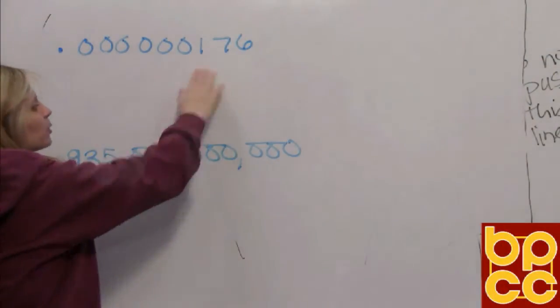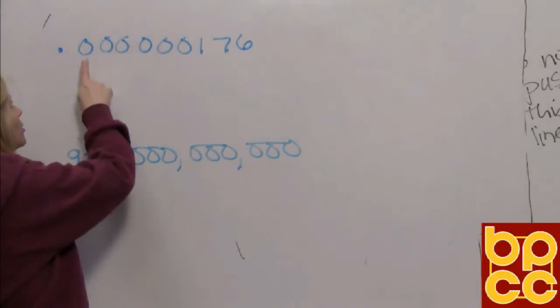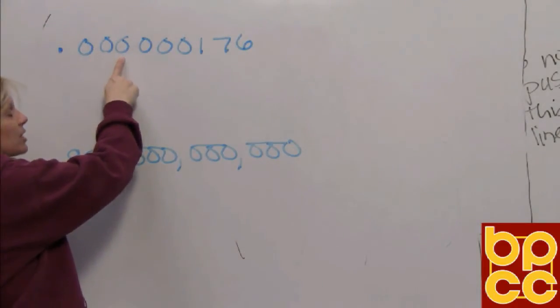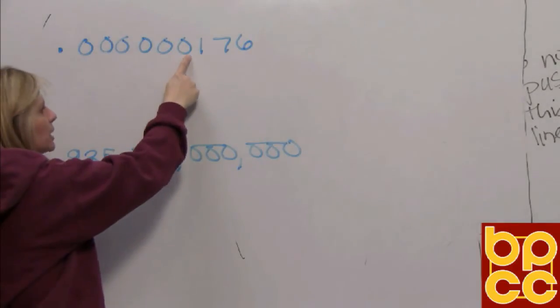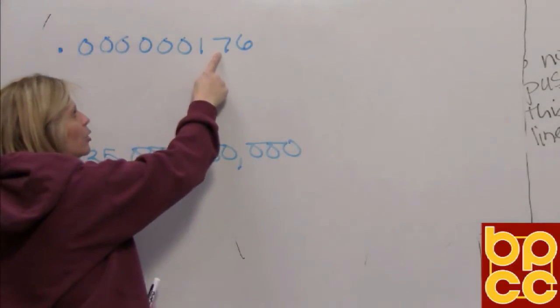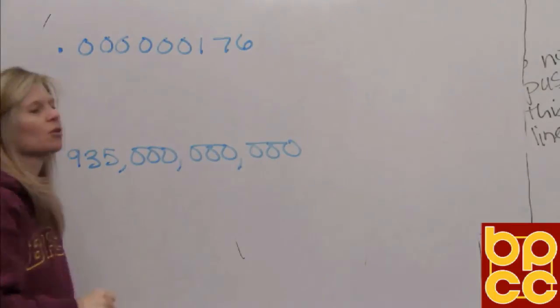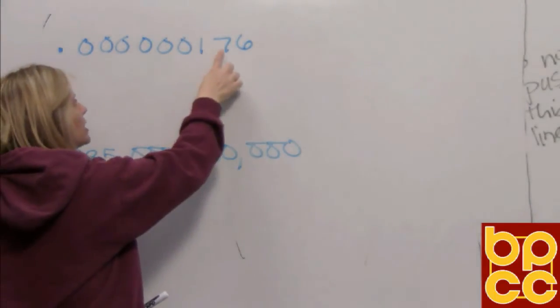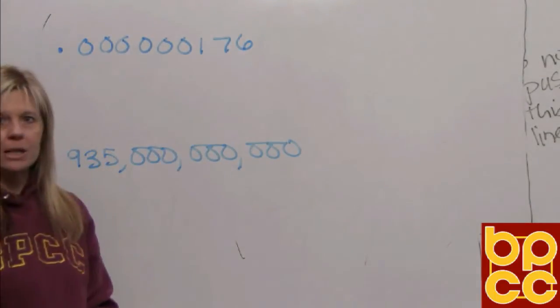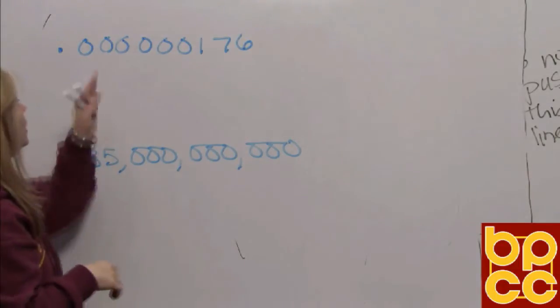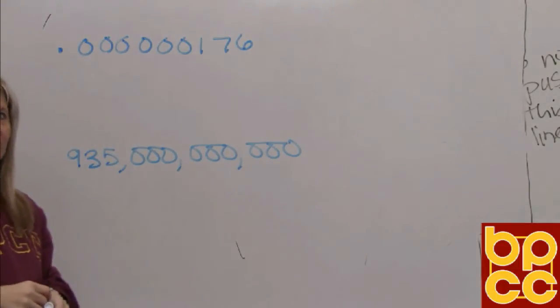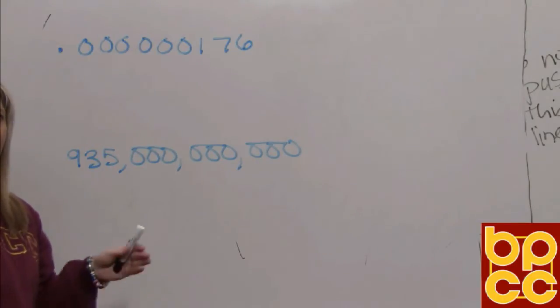To read this decimal you have to understand place value, so this is your tens, hundreds, thousands, ten thousands, hundred thousands, millions, ten millions, hundred millions, billions. So this is read a hundred seventy-six billions. It's probably the size of a microscopic cell. We would not want to see that number written that way in a scientific book because of all the zeros.